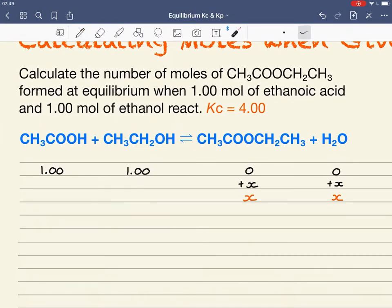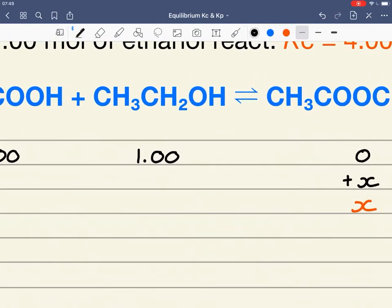The equation tells me for every mole of ethyl ethanoate which forms, a mole of ethanol must have reacted. So if this increases by X, then the moles of ethanol will decrease by X, to give me 1 minus X moles at equilibrium.